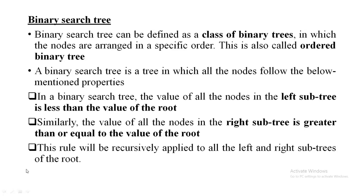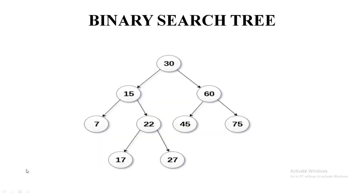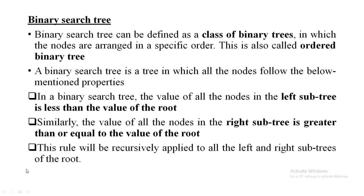In a binary search tree, the root node should be greater than the left subtree and smaller than the right subtree. So a node has a left subtree and a right subtree. The root must be greater than all nodes in the left subtree and smaller than all nodes in the right subtree. A tree following these rules is called a binary search tree.